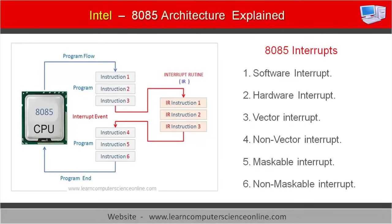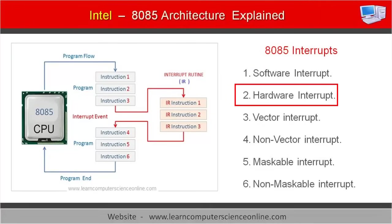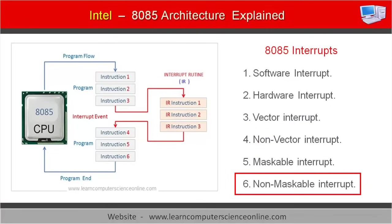Interrupts can be classified into the following groups: first, software interrupt; second, hardware interrupt; third, vector interrupt; fourth, non-vector interrupt; fifth, maskable interrupt; and sixth, non-maskable interrupt. We have now discussed what interrupts are and the different types of interrupts used in the 8085 processor.